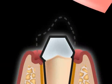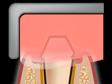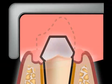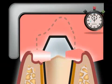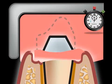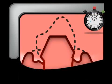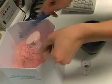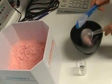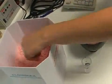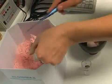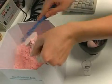Furthermore, the material needs to harden quickly at a certain point in time, but must remain malleable long enough to be worked on. Most materials are made up of two components that are mixed together immediately before usage and then begin to harden.